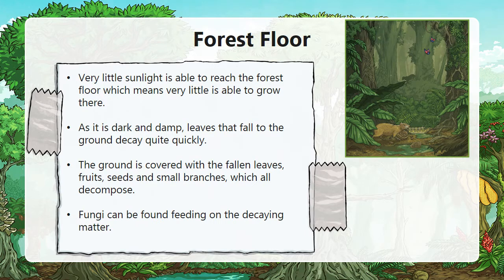Now we are at the forest floor. Very little sunlight is able to reach the forest floor, which means very little is able to grow here. As it is dark and damp, leaves that fall to the ground decay quite quickly. The ground is covered with fallen leaves, fruits, seeds and small branches, which all decompose. Fungi can be found feeding on the decayed matter.